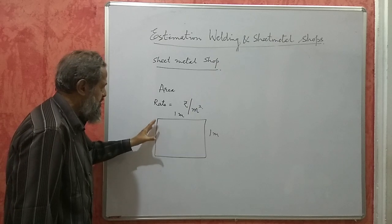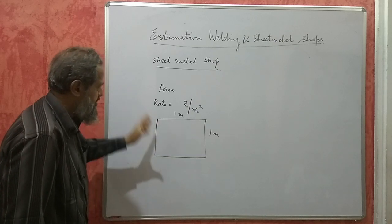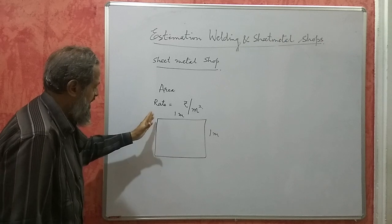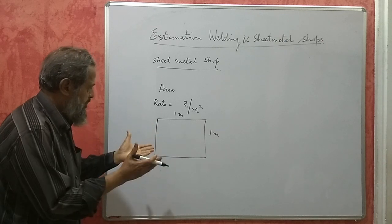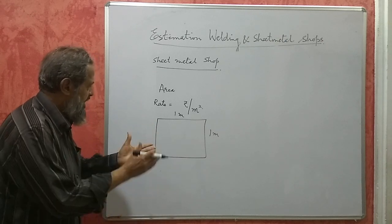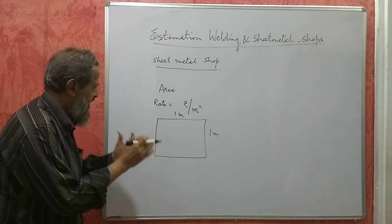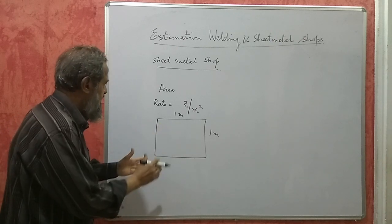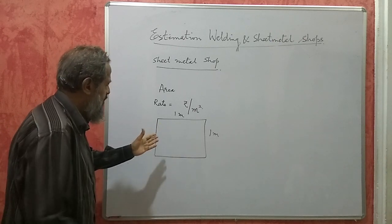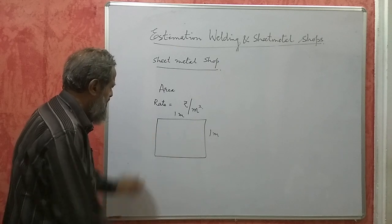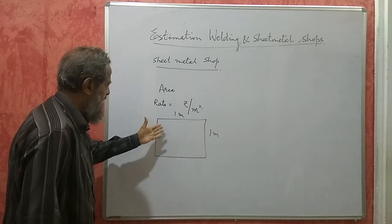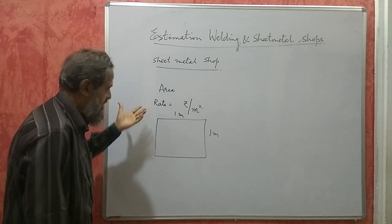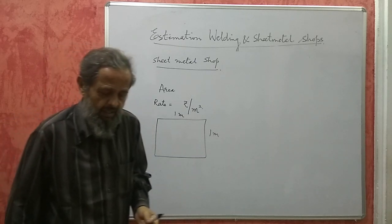What we have to do here is find out the material cost. The rate will be given, and the product will be given to us. We have to find out what area of sheet is required to make that particular product. Then rate into area required will give you the cost of the product.